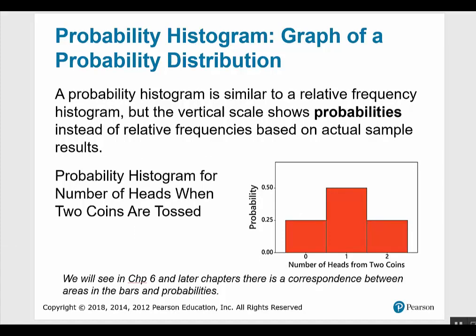A graph of a probability distribution is called a probability histogram. It's similar to a relative frequency histogram but the vertical scale shows probabilities instead of relative frequencies based on actual sample results. In chapter 6 and later chapters, we will see there is a correspondence between areas in the bars and probabilities.